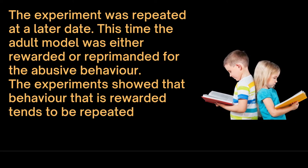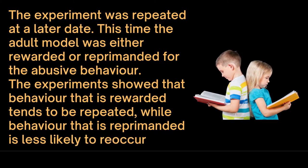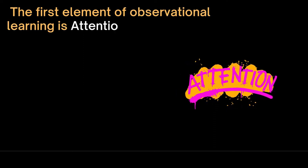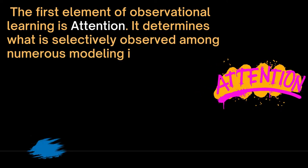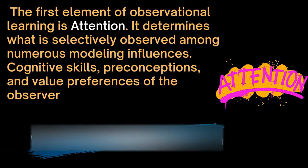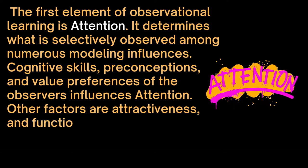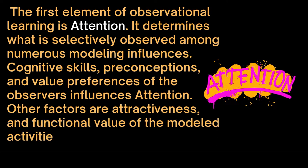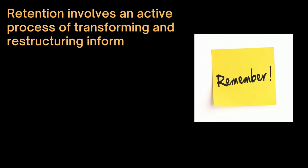The first element of observational learning is attention — it determines what is selectively observed among numerous modeling influences. Cognitive skills, preconceptions, and value preferences of the observers influence attention. Other factors include attractiveness and functional value of the modeled activities.